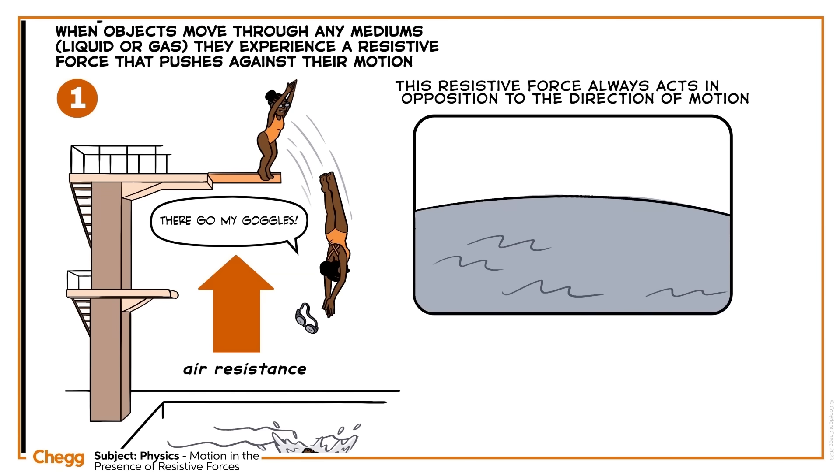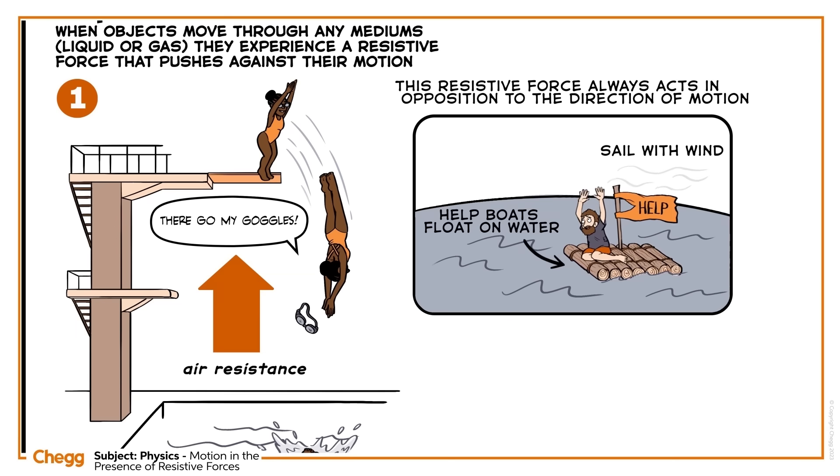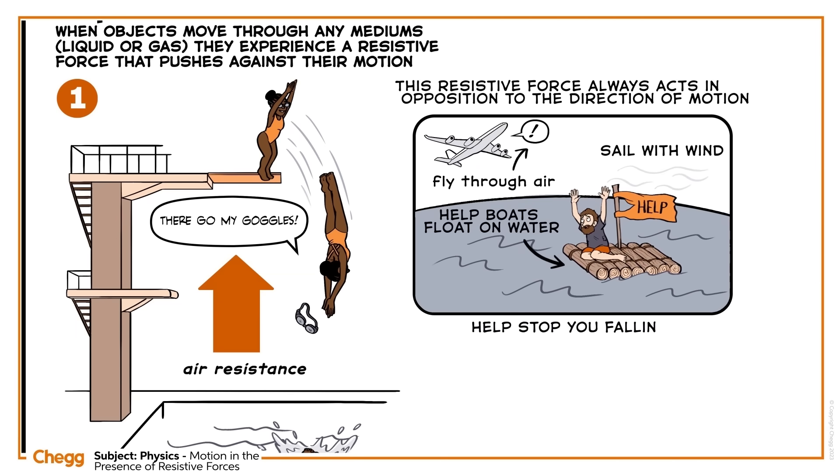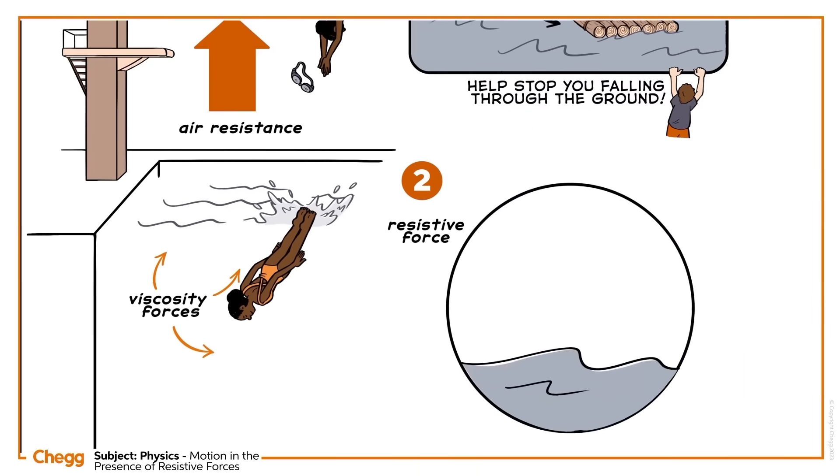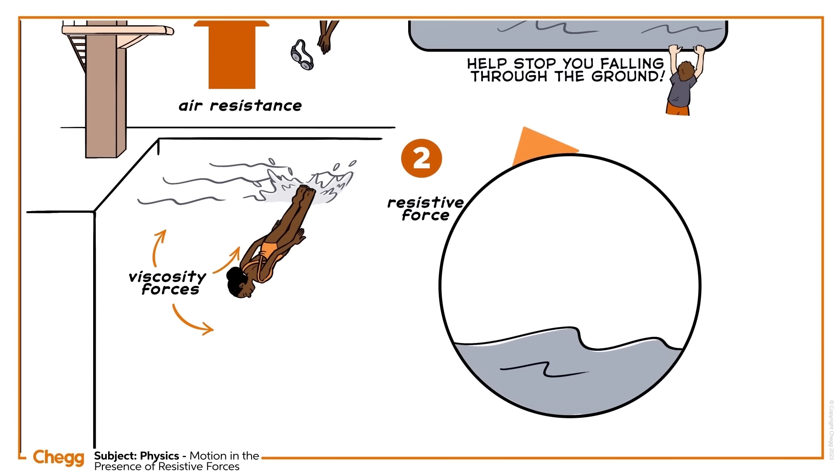Resistive forces, for example, help boats to float on water and to sail with wind. They help airplanes fly through air, and they help stop you falling through the ground. But resistive forces behave differently relative to the size and weight of the object, the speed at which it's travelling, and the medium in which it's travelling.